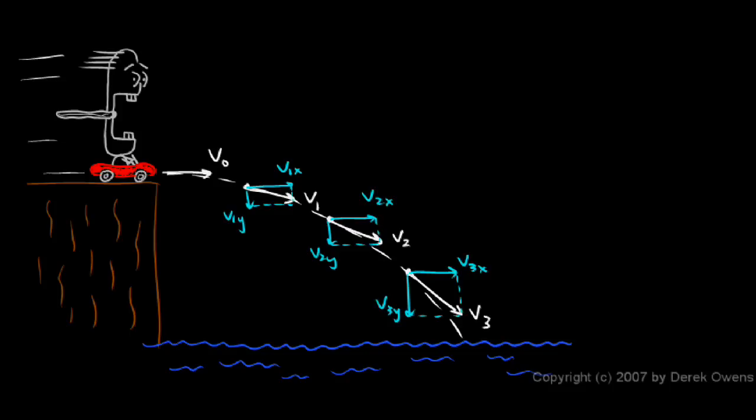That means V0 here is the same as V1X and V2X and V3X. All of those are the same. Gravity pulls him down, but gravity does not pull him forward or back. Gravity exerts no force to the left or to the right. So there's no acceleration in the horizontal direction. So the horizontal velocity doesn't change.